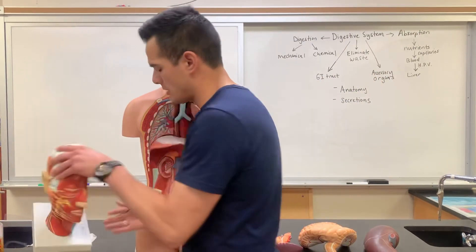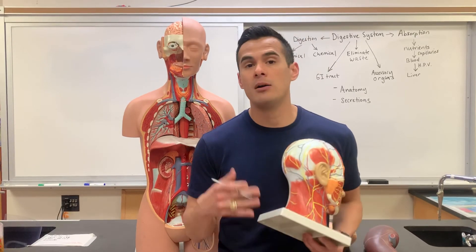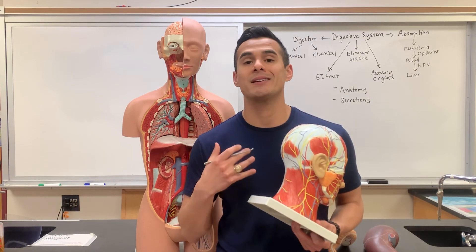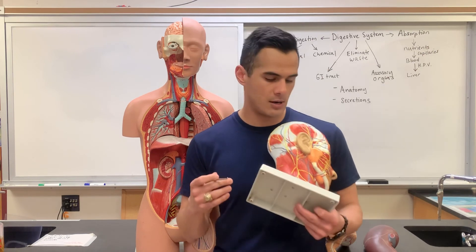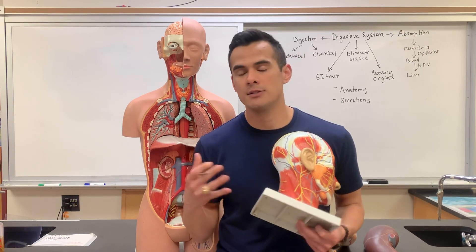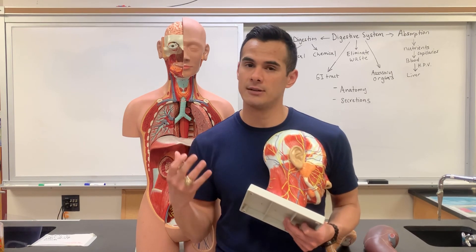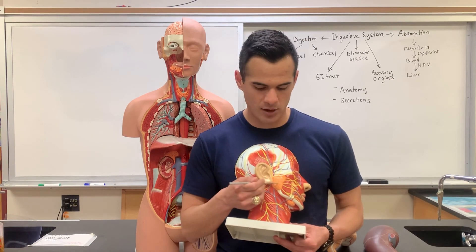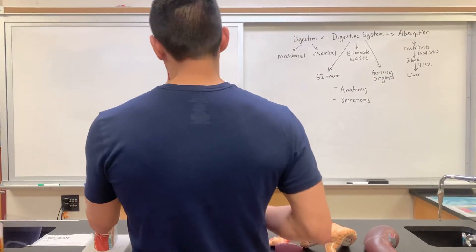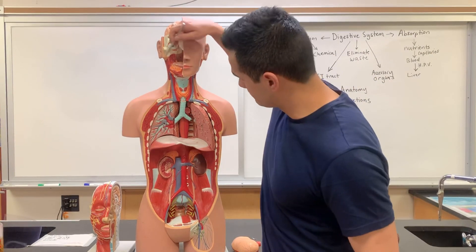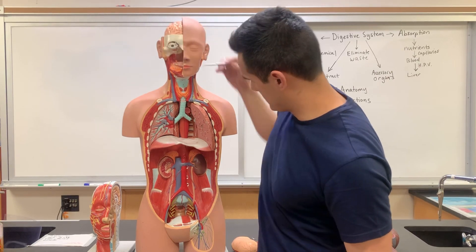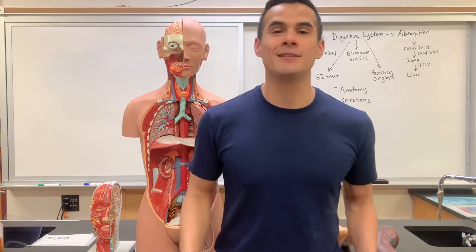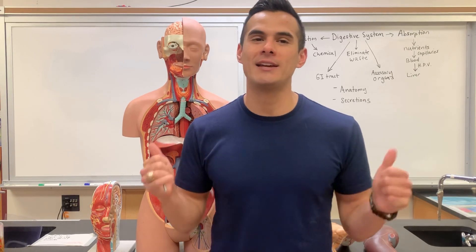Another aspect is chemical digestion. Some of the glands that secrete amylase — which helps to digest and break down starch — include the parotid gland. On the torso model there is also the sublingual gland, and then the submandibular gland, because it's below the mandible. That covers this lecture — make sure to like and subscribe.